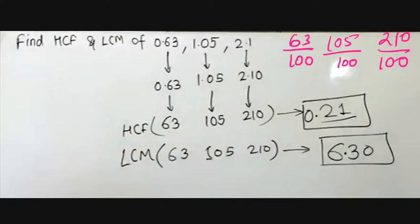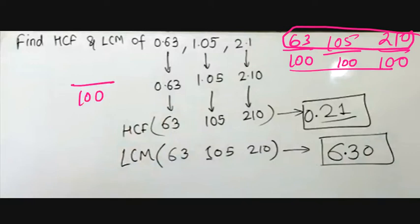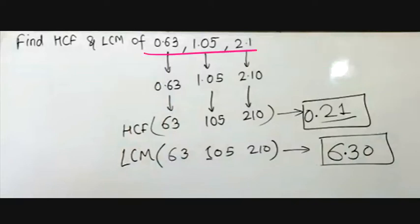The fraction rule is: HCF is above (numerator) and LCM is below (denominator). So the highest common multiple of the denominators here will be 100, and the HCF of the numerators is 21. If we solve this, the HCF will be 0.21.